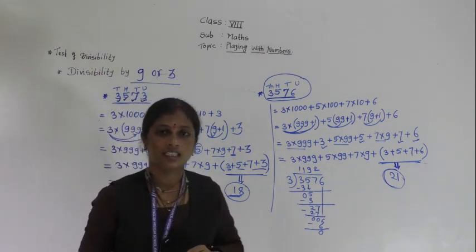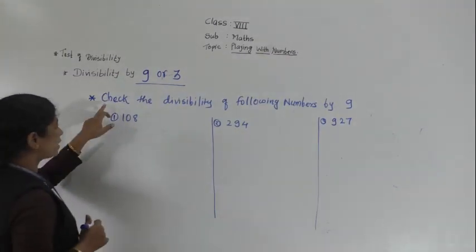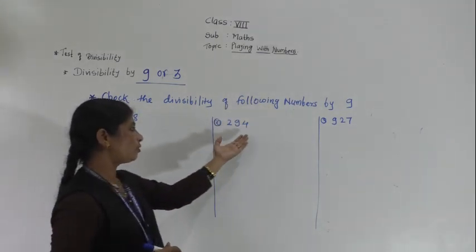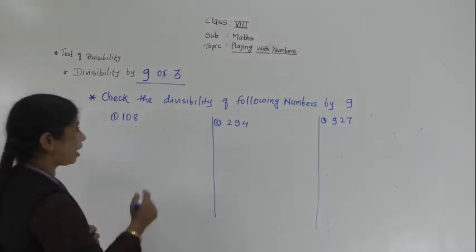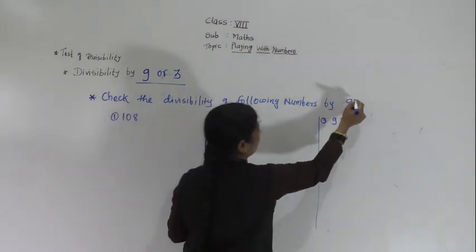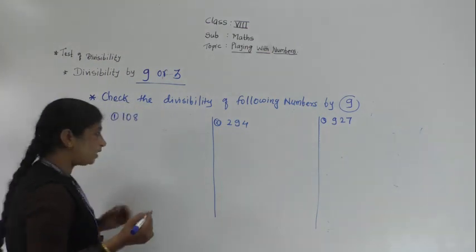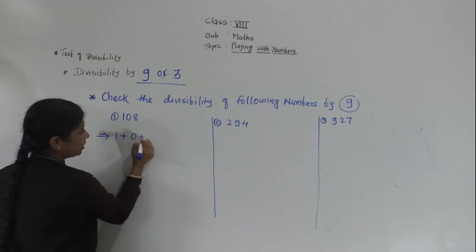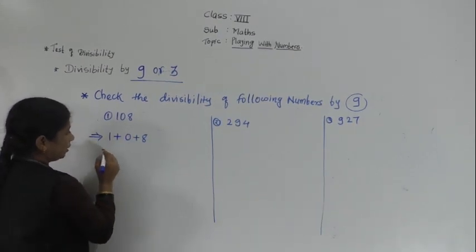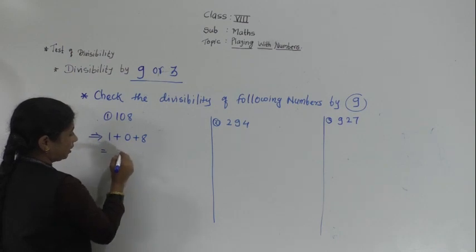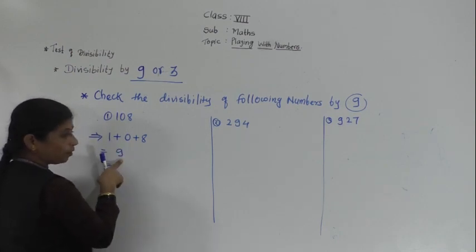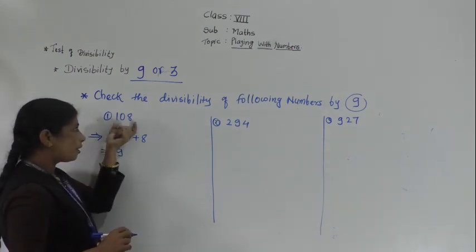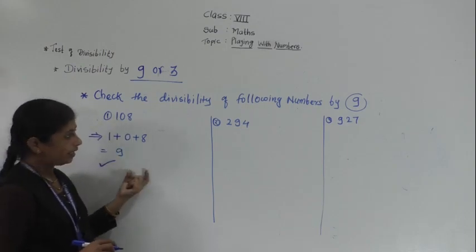Let's check the divisibility of the following numbers by 9: 108, 294, and 927. For 108: 1 + 0 + 8 = 9. Is 9 a multiple of 9? Yes. So 108 is divisible by 9 and follows the test of divisibility by 9.